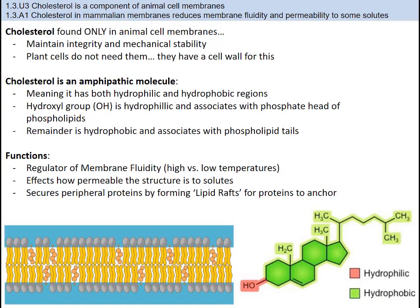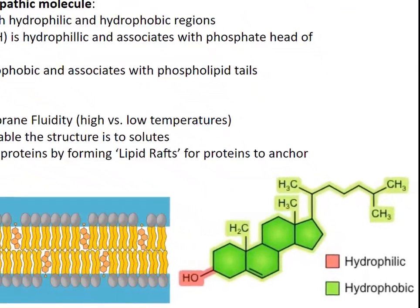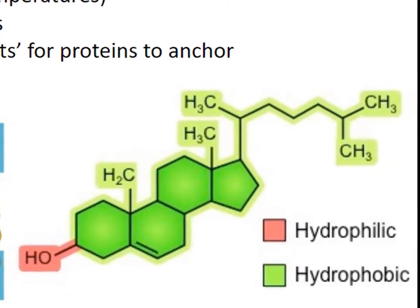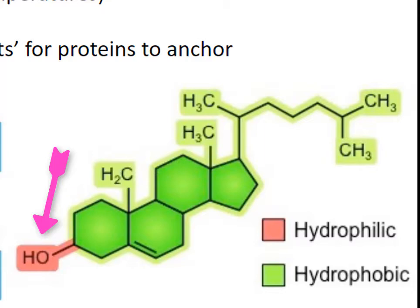Another major component of animal cell membranes is cholesterol. Plants don't have cholesterol because they don't need it. Cholesterol gets a bad rap in life because we associate it with heart disease, but if you had no cholesterol in your body, you would be in trouble. The chemical structure of cholesterol has four rings and an OH hydroxyl group on the end. You need to be able to recognize this structure. Cholesterol is also an amphipathic molecule, just like the phospholipid. The hydroxyl group is hydrophilic and the rest of the cholesterol is hydrophobic.